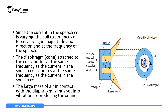Since the current in the speech coil is varying, the coil experiences a force. This coil is being cut by the magnetic field from north pole to south pole, and since the coil carries an electric current, using Fleming's left hand rule we can determine that a force is produced. Since the current in the speech coil is varying, the coil experiences a force of varying magnitude directed at the frequency of the speech. The diaphragm, or cone, attached to the voice coil vibrates at the same frequency.